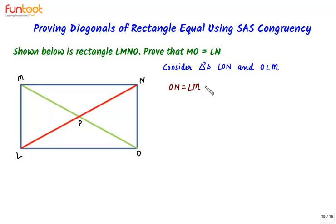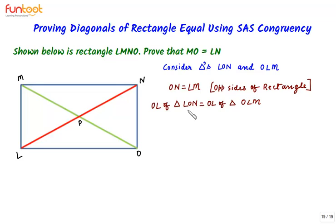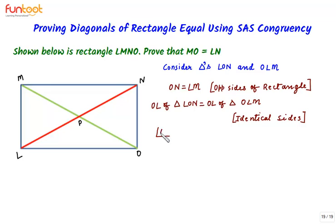In triangle LON and triangle OLM, ON is equal to LM, as these are opposite sides of a rectangle and hence of identical size.